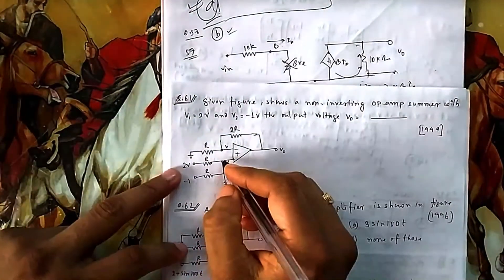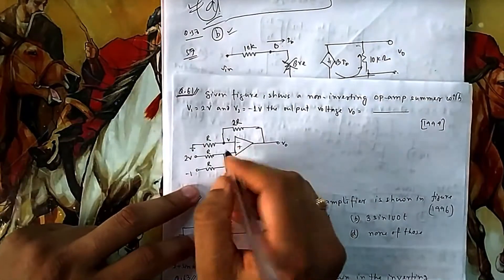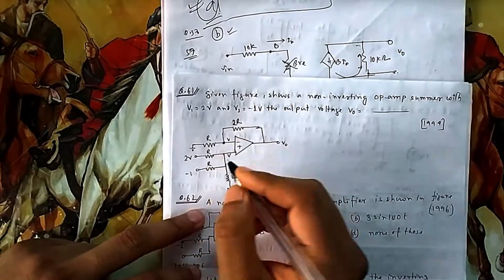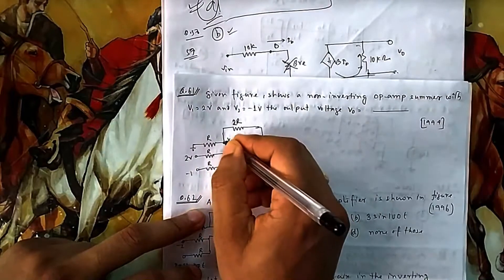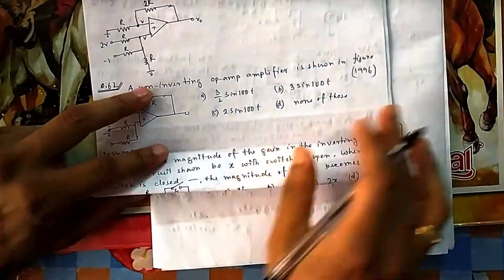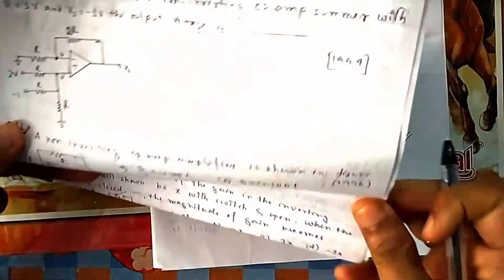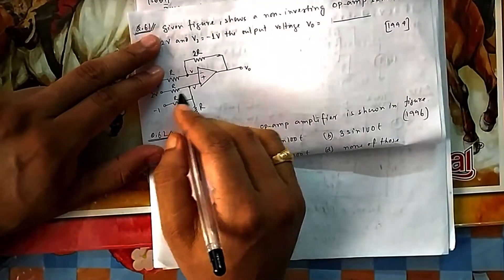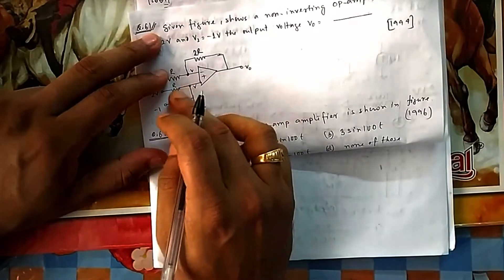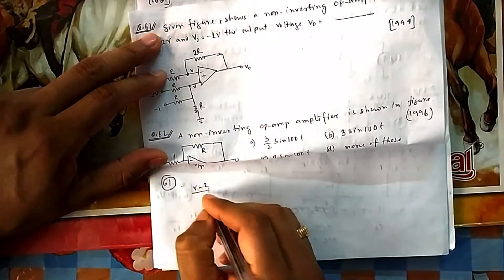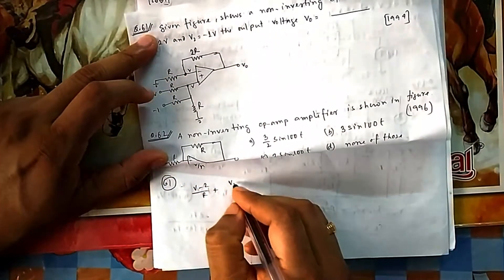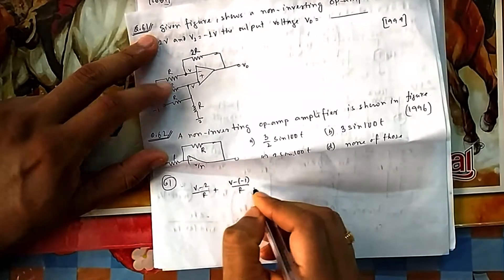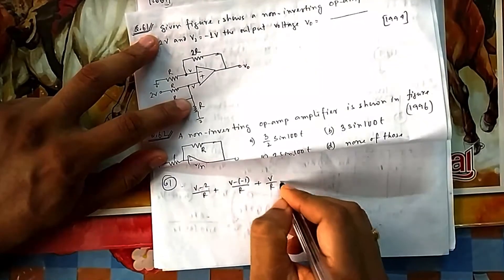For op-amp analysis, we always use nodal analysis. The key property is that V+ and V− are at the same potential when feedback is present. We draw a node at V+ and another at V−, and then find the answer — it's very simple and a very scoring topic.